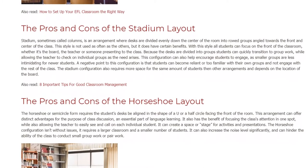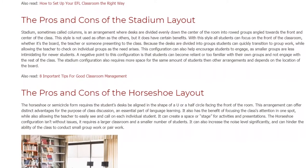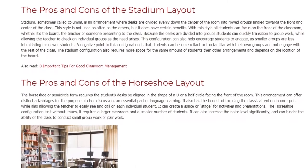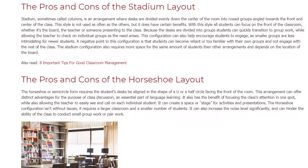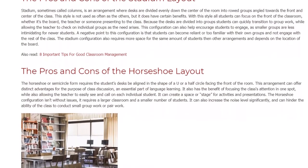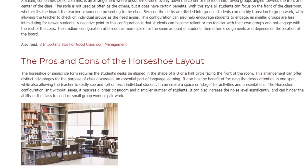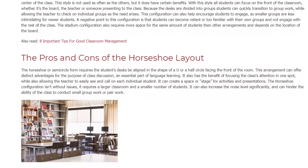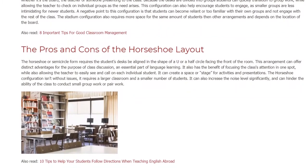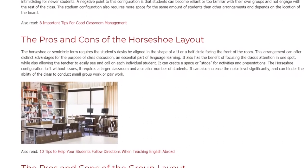The Pros and Cons of the Horseshoe Layout. The Horseshoe, or semi-circle form, requires the student's desks to be aligned in the shape of a U or a half circle facing the front of the room. This arrangement can offer distinct advantages for class discussion, an essential part of language learning. It also has the benefit of focusing the class's attention in one spot, while allowing the teacher to easily see and call on each individual student. It can create a space or stage for activities and presentations.